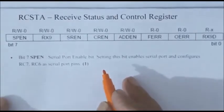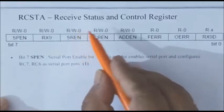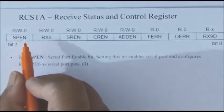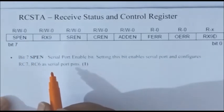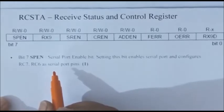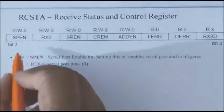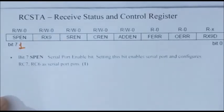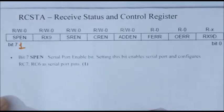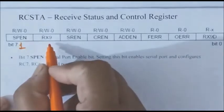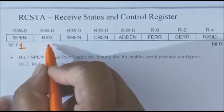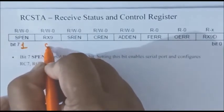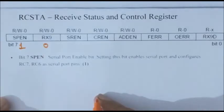This is the 8-bit format of the RCSTA register — the Receive Status and Control register. The D7 bit is SPEN, and this bit should be set to 1 when we want to enable the serial port. Since we are writing the transmitter program, we have to enable this bit to 1. Even if you are writing a receiver program, this should be enabled to 1. The next bit is RX9 — used for reception. If it is 1, that means 9-bit reception is enabled. Since we are writing the transmitter program, this will be in don't-care condition, so we initialize it to 0.